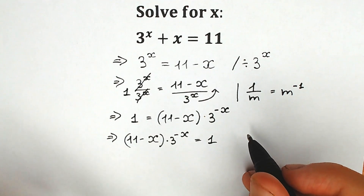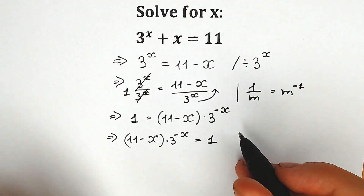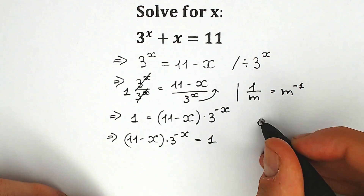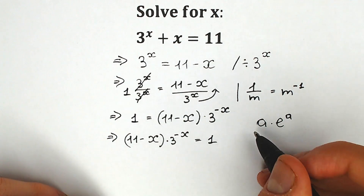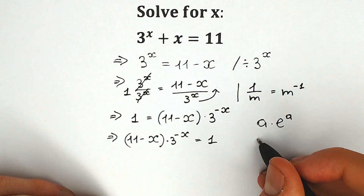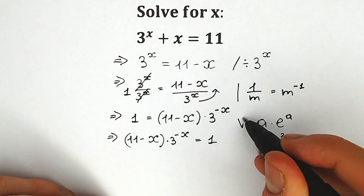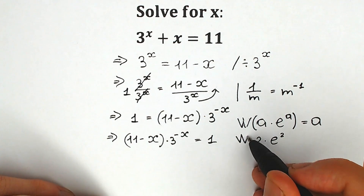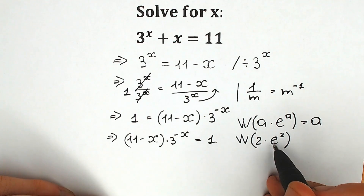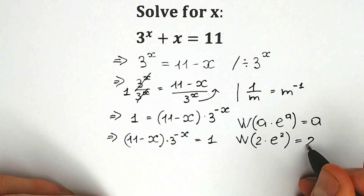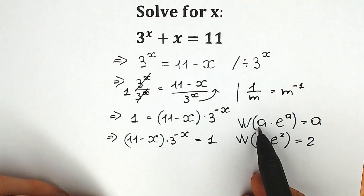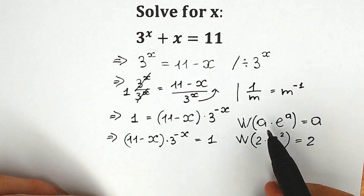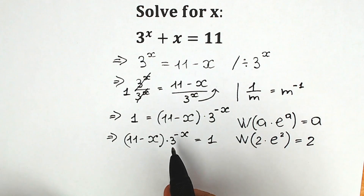This is our first step. For the second step, we need to know a little about what is called the Lambert W function. This function helps us a lot. It works like this: when we have a times e to the power a — for example, 2 times e to the power 2 — and we apply the Lambert W function, we get back just our a, which would be 2 in this example. Now let's try to create this type of expression on the left side — we need a, we need e, and we need a as the power of e.